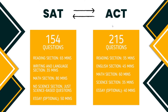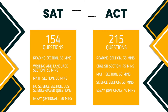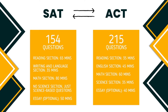The ACT science section has 40 multiple choice questions you should finish in 35 minutes. This section consists of seven science-based passages presented with graphs, charts, tables, and research summaries on topics such as biology, chemistry, physics, and earth-space sciences such as astronomy, geology, and meteorology. Most questions can be answered from the information presented, but be prepared for three to four questions that may require outside knowledge, including looking up data and trends, making predictions, and synthesizing information.